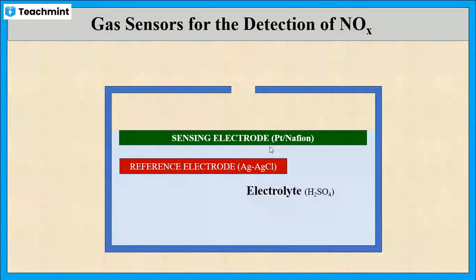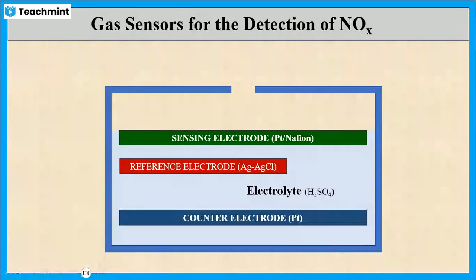And the last one is the counter electrode which is made up of platinum and it is used to complete the circuit. The working electrode and the reference electrode are connected to a voltmeter and these electrodes are connected to the counter electrode via an ammeter.